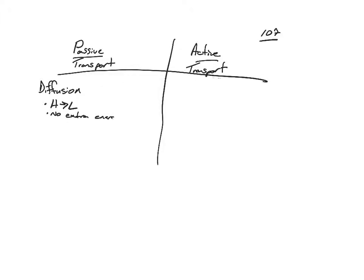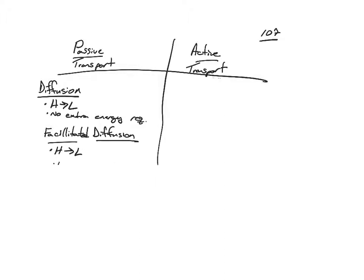All three passive transports go from high to low with no extra energy required. On page 107 of your assignment is a great graphic organizer with passive transport on one side and active transport on the other. You need to know all of that.